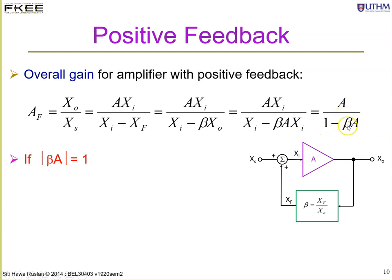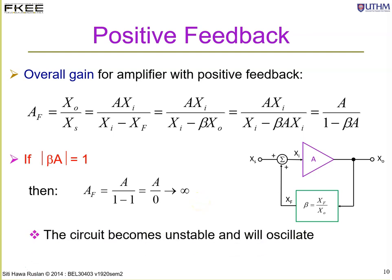If beta·A equals 1, then the denominator becomes 1 minus 1 equals 0, meaning the overall gain is A divided by 0, which goes to infinity. What actually happens is the system becomes unstable and oscillates, producing a sinusoidal waveform. So we don't need an external source x_s — just the closed loop where beta multiplied by A equals 1.